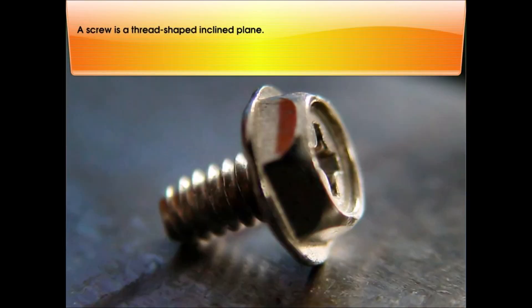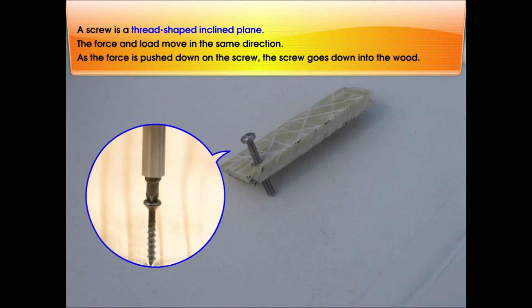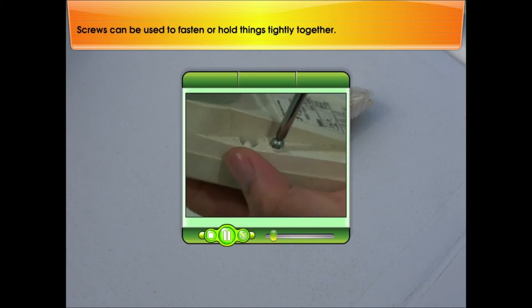A screw is a thread-shaped inclined plane. The force and load move in the same direction. As the force is pushed down on the screw, the screw goes down into the wood. Screws can be used to fasten or hold things tightly together.